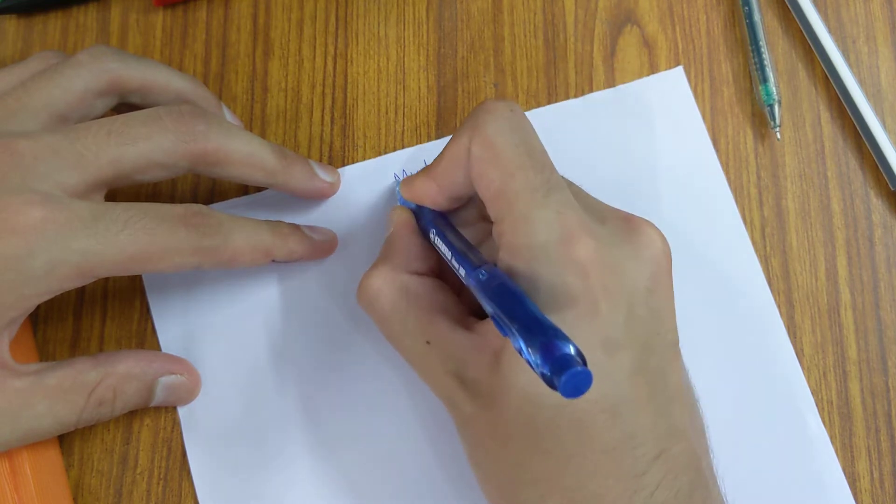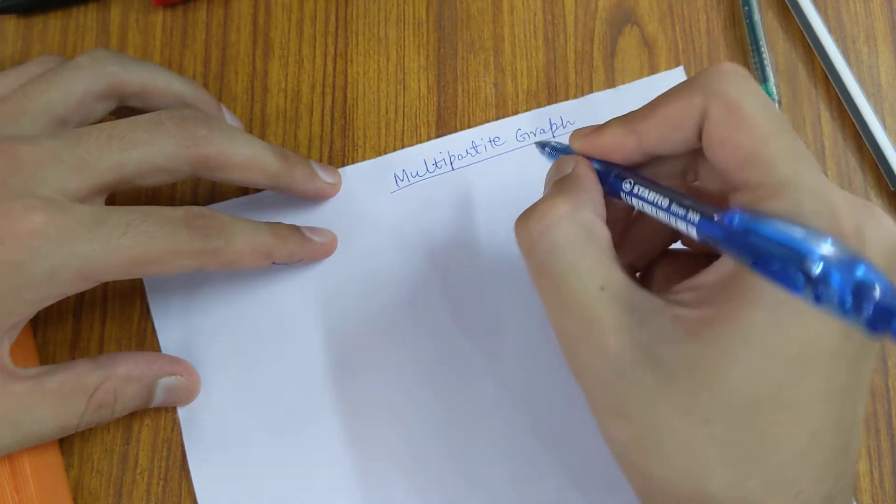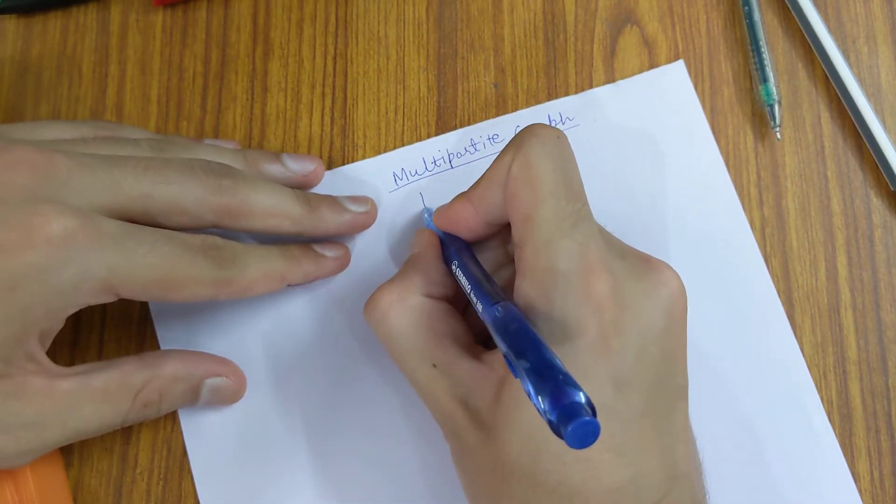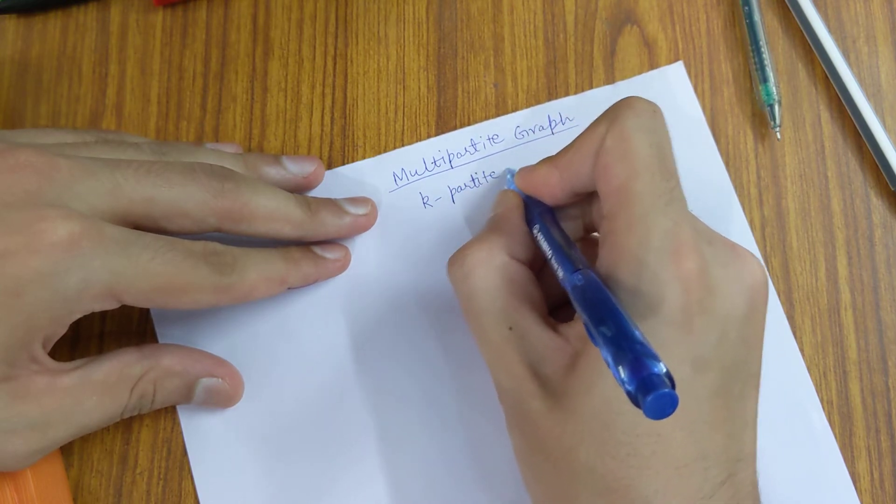A bipartite graph is also a special case of multipartite graph, so this will cover that as well. We'll talk about the general term which is the k-partite graph.